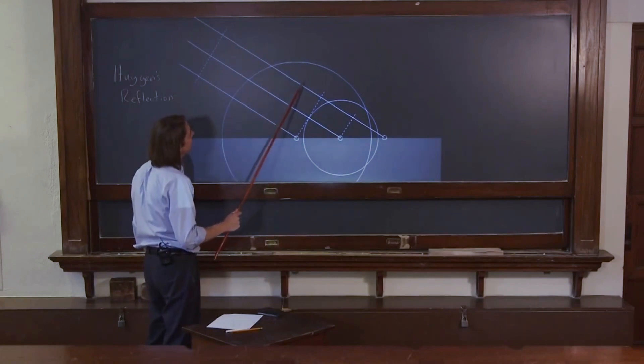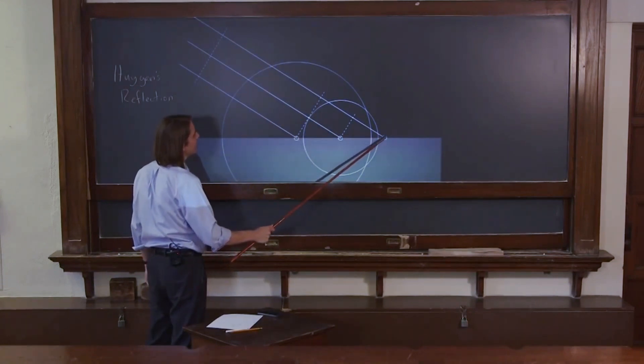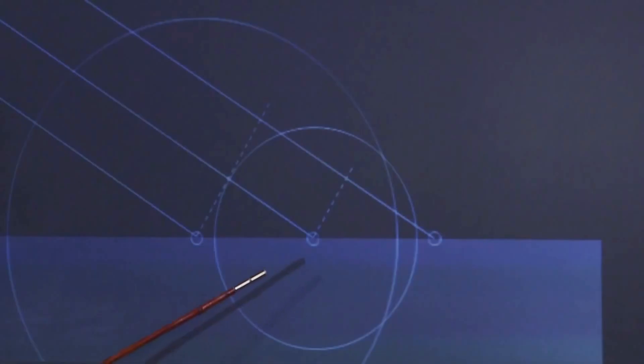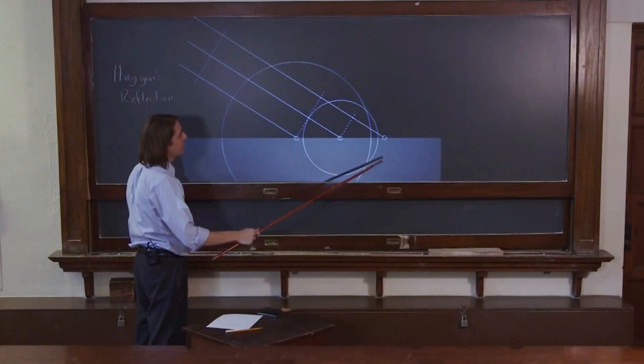So by the time this Huygens' wavelet got to here, this one had been growing on the surface that big. This one grew on the surface that big. And now, where does it go from there? You draw the peripheral line, the tangent line to those three circles, looks like that.